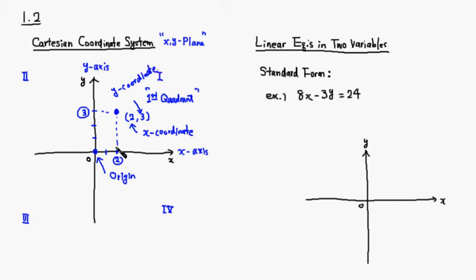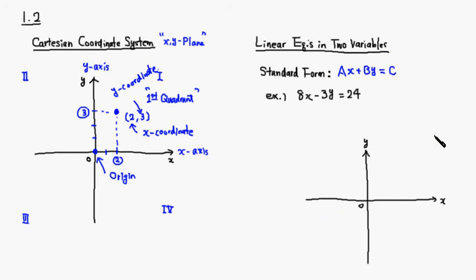So those are the basic terminology. If you want to locate a point, you just indicate the x-coordinate and the y-coordinate — these two numbers specify the location of a point. Another topic is a linear equation in two variables. There's something called standard form, written as Ax plus By equals C, where A and B are constants. The reason it's called a linear equation is that if you sketch the graph, it's going to be a straight line. For example: 8x minus 3y equals 24.